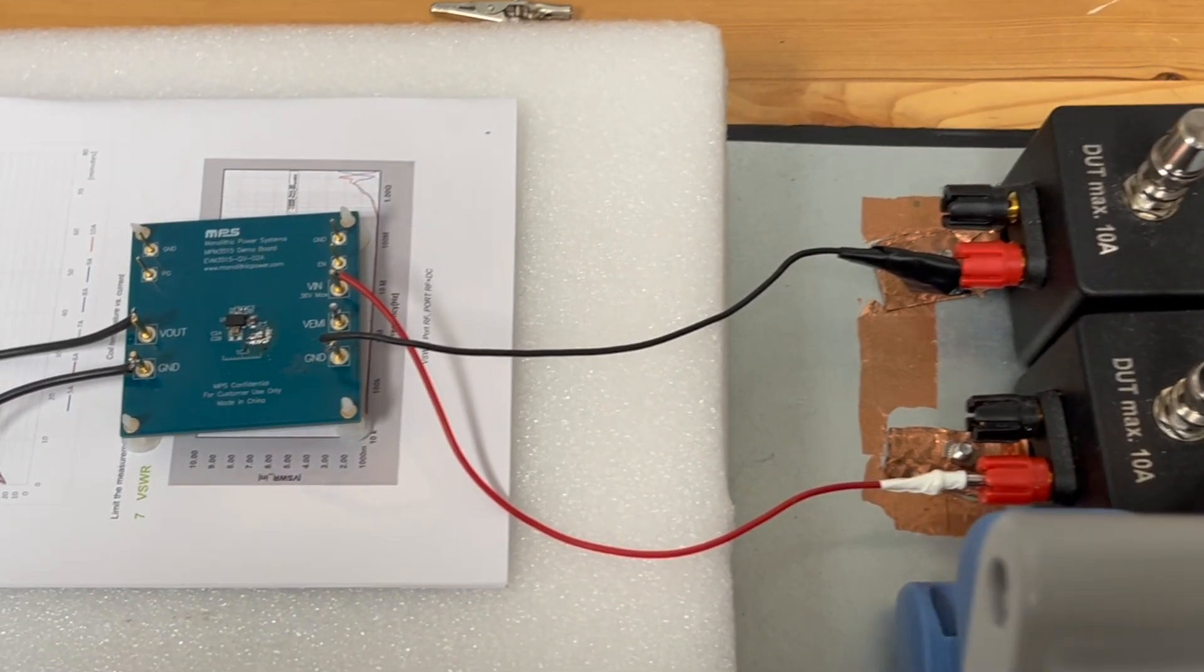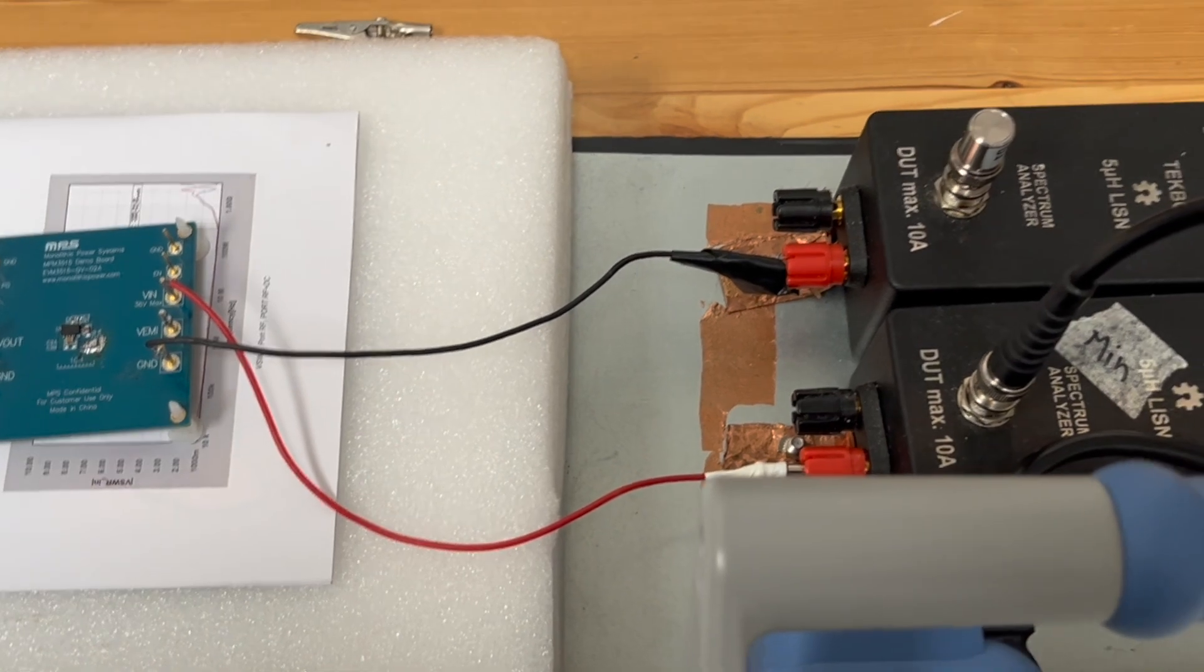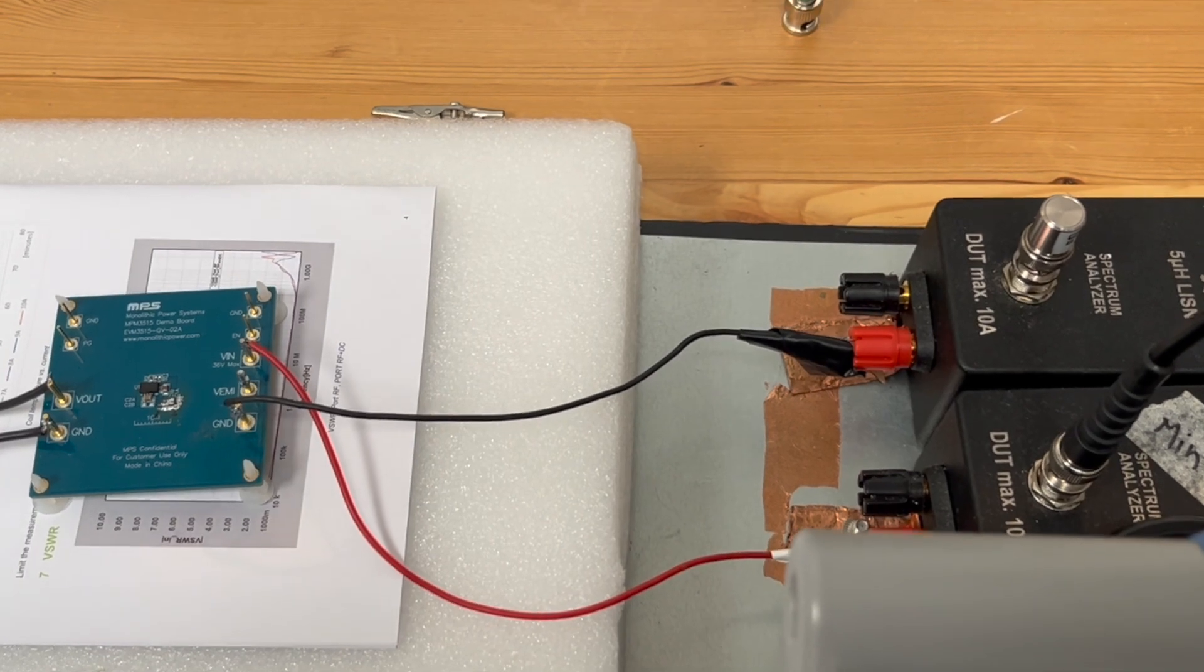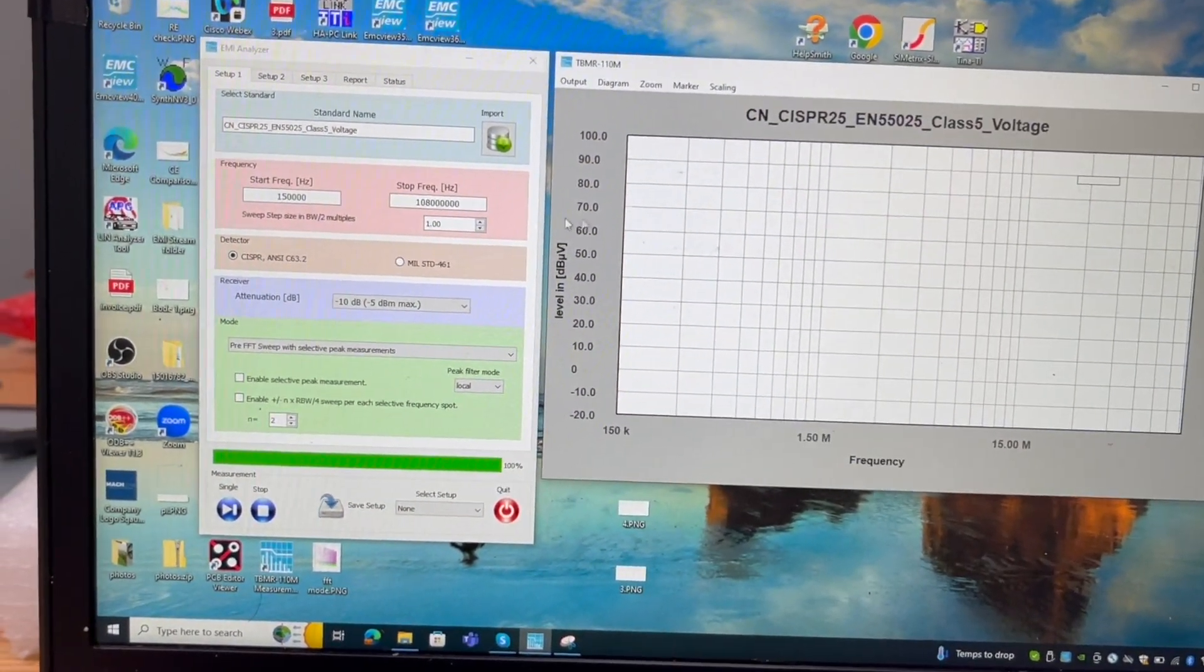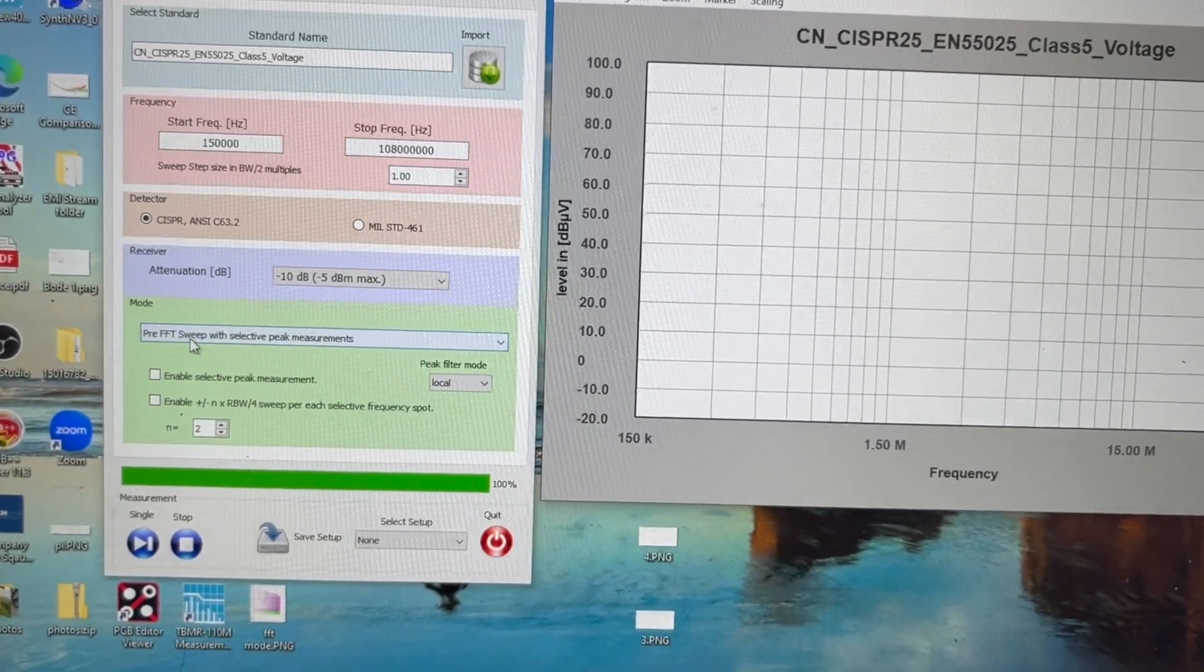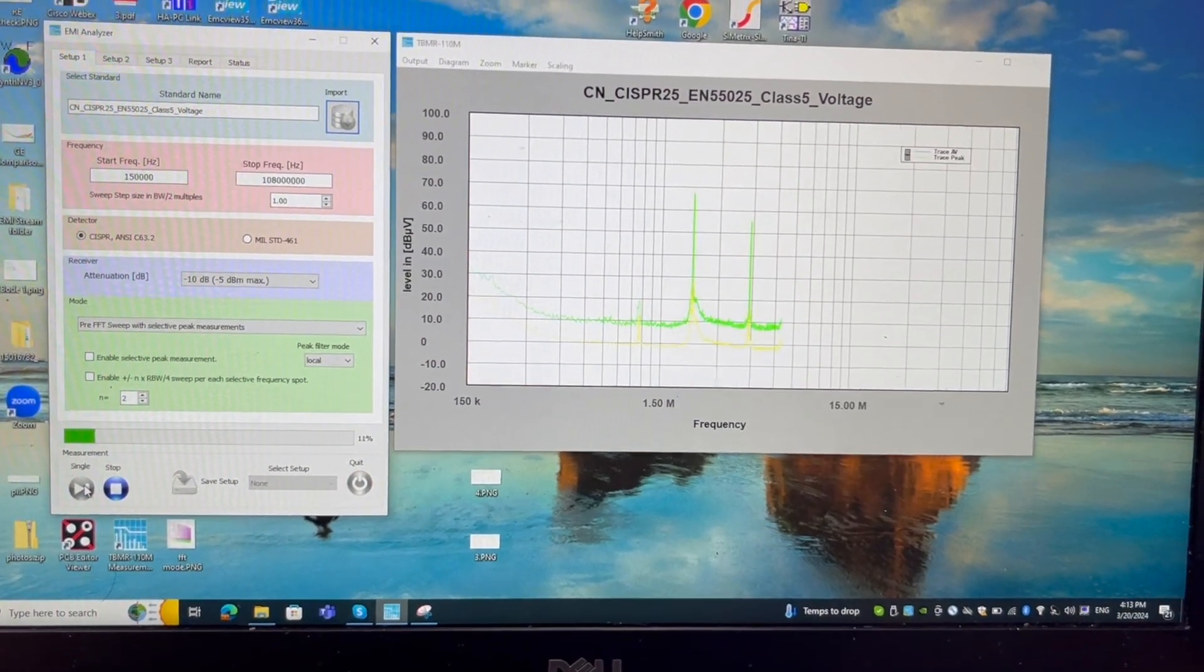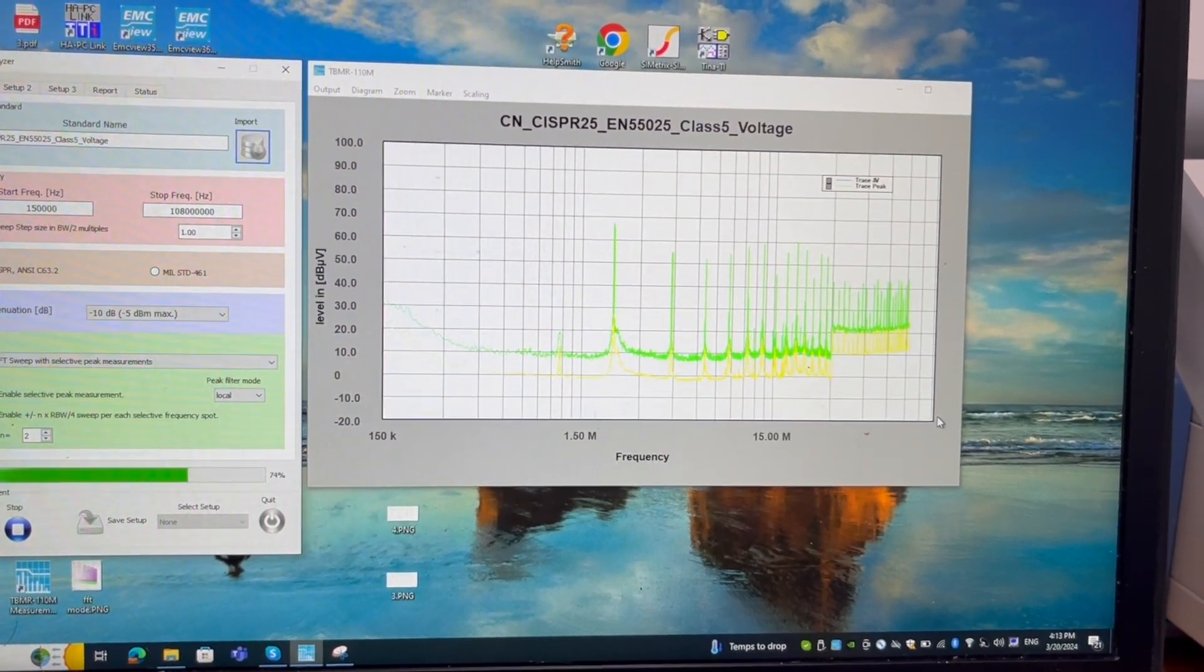We put the DUT to the test bench. I'm going to switch on the power, so now the power is on. I'm going to perform a conducted emission. I didn't set up the limit line, but I just wanted to quickly test it. Currently you can see I'm selecting pre-scan FFT sweep. I'm going to single it.